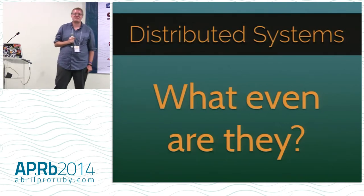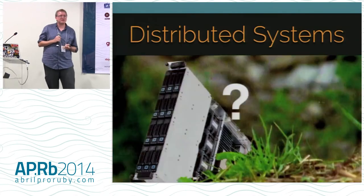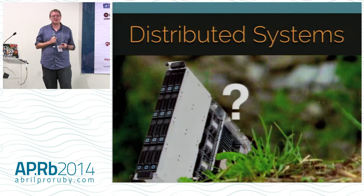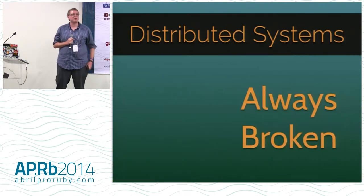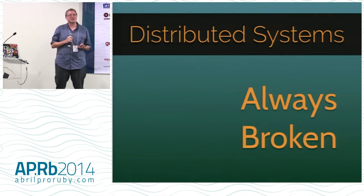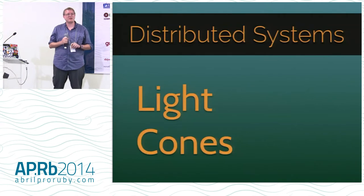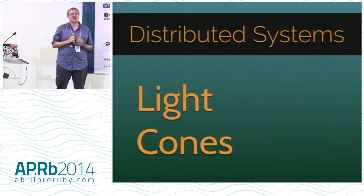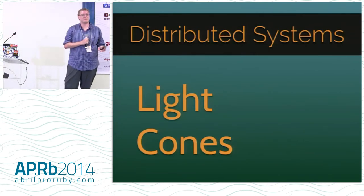I'm going to be talking about distributed systems — and what even are distributed systems? It's hard to know, it's a nebulous concept. One definition is they're a computer system that doesn't fit in one single computer. Another is that they're computer systems that are always broken — not necessarily completely broken, but never completely not broken, and they're expected to work with some amount of breakage. Another definition uses light cones: they're a computer system where the amount of time any information takes to move from place to place is a significant factor in the design and usability of it.